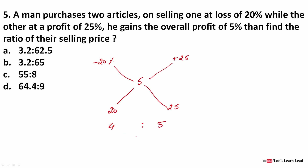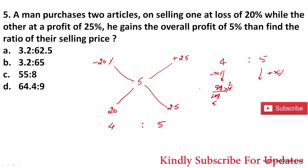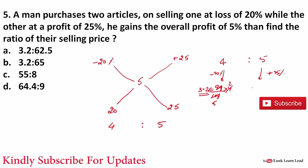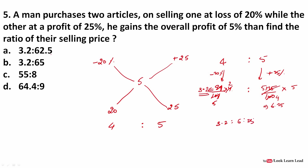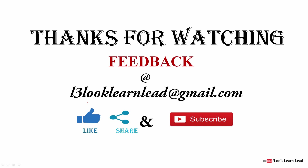With ratio 4:5, apply 20% loss to 4: 80/100 × 4 = 3.2, and 25% profit to 5: 125/100 × 5 = 6.25. So the ratio is 3.2:6.25. This question can also be solved using the method from the previous question — use whichever method is easier for you. If you liked the video, please click like and share. Thank you.